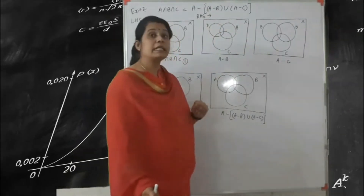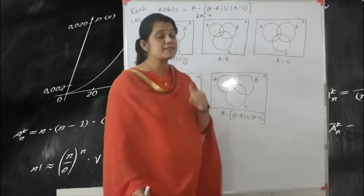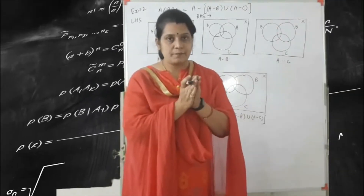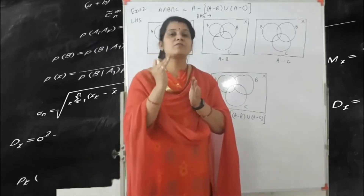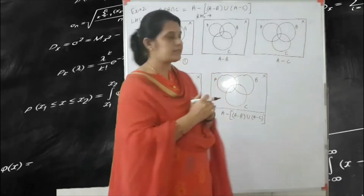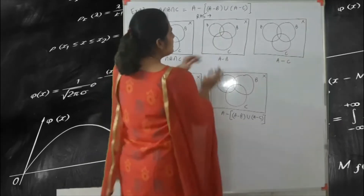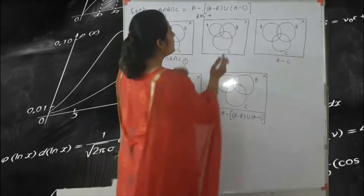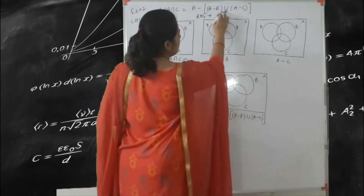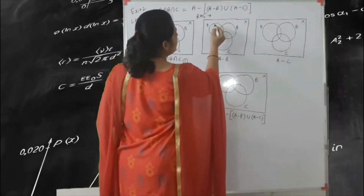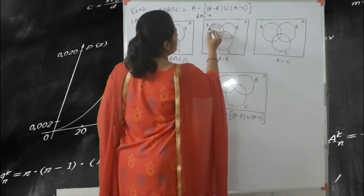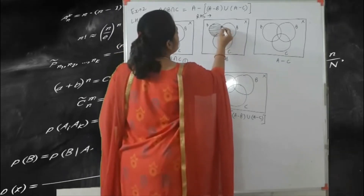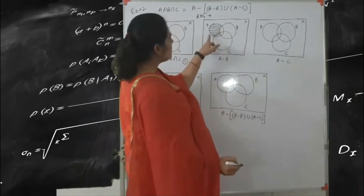First we find out A minus B. So A minus B means: the elements of set A where the elements of set B are not included in set A. So this is your set A — here you ignore the B circle, here you ignore the C circle. So not in B means B is not included in set A. This shaded region is your A minus B.